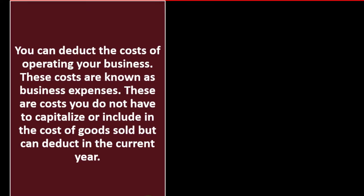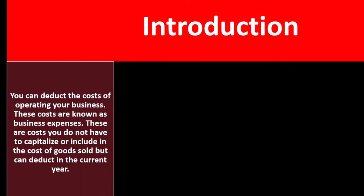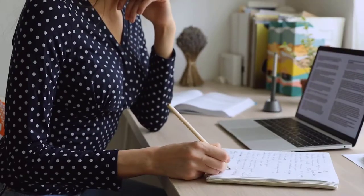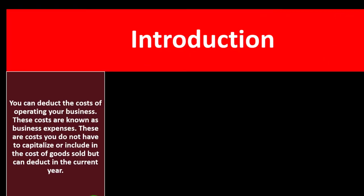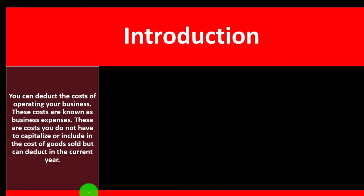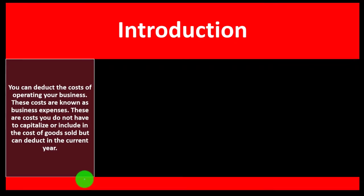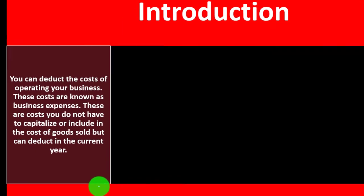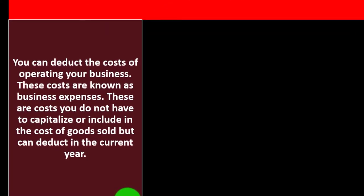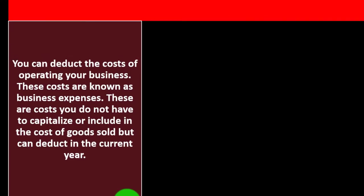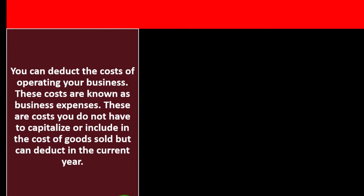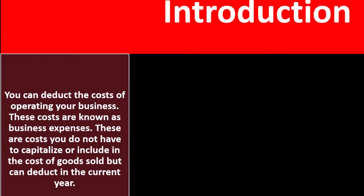So in general, you can deduct the costs of operating your business. These costs are known as business expenses. These are costs you do not have to capitalize, meaning you don't have to put them on the books as an asset. When you're talking about the tax code, we only really see the income statement, so we don't see the balance sheet, but we would be putting them on the books as an asset. We do have a sub-schedule of things that you might have to capitalize, like depreciable assets on a sub-schedule for the tax return, recording those assets as well as the depreciation related to them.